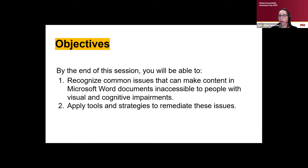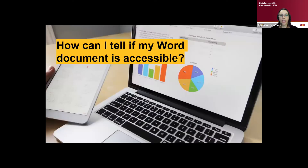By the end of the session, you'll be able to recognize common issues that can make content in Microsoft Word documents inaccessible to folks who have visual and cognitive impairments, and apply tools and strategies within Microsoft Word to remediate those issues. A pretty common question when I talk with faculty or do presentations on this topic is: how can I tell if my Microsoft Word document is accessible? Especially if it's something you've already created — is it a good use of my time to go back and make it accessible?